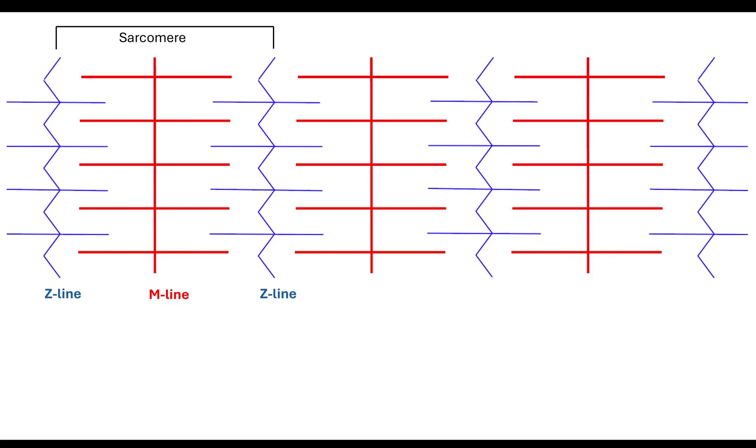It's important that we know that a sarcomere is a Z line to a Z line, and in the middle is the M line. We go all the way along, we have these contractile units in a big long row.